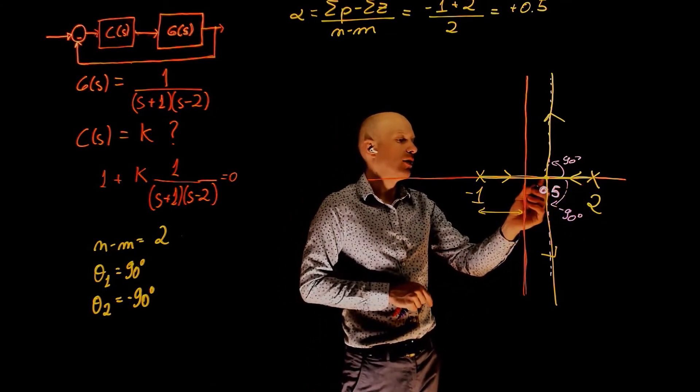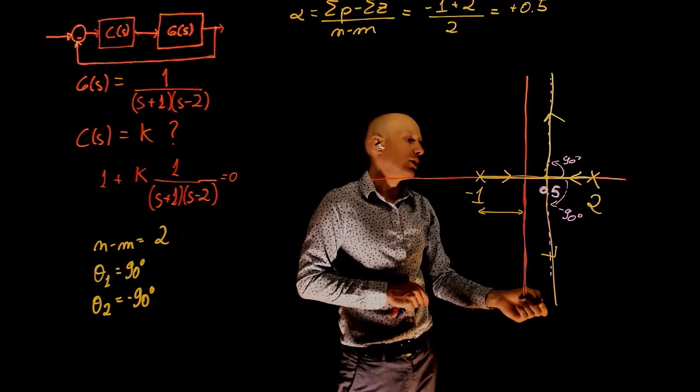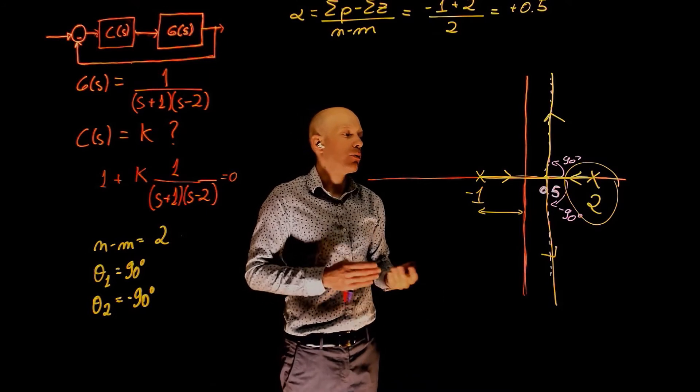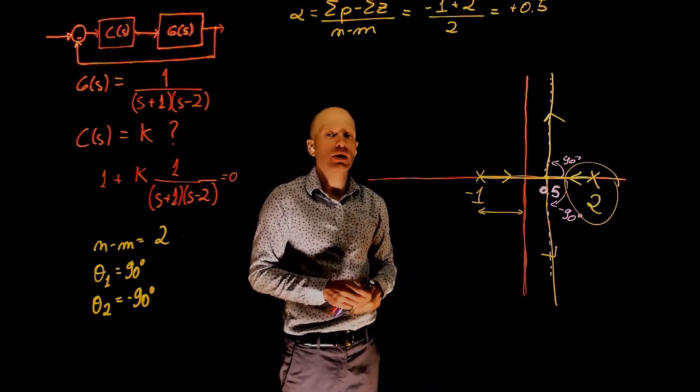It will come to positive 0.5 and go up or down. So this pole here remains unstable at all times. A proportional controller is not sufficient to stabilize the system.